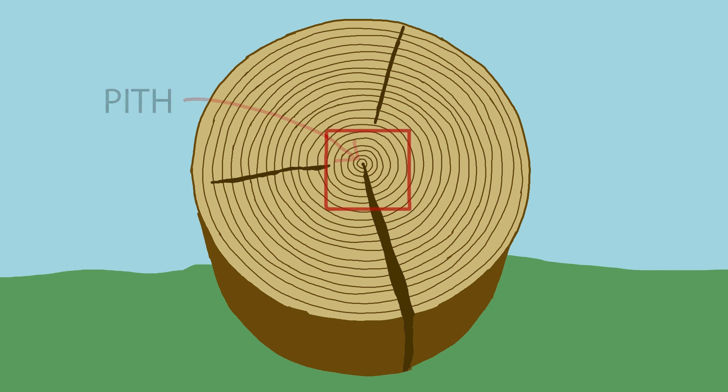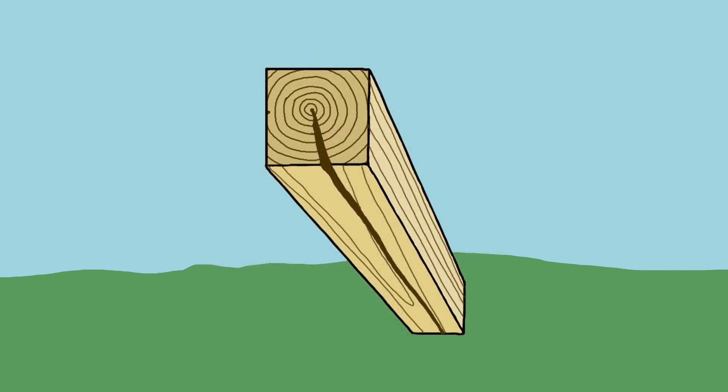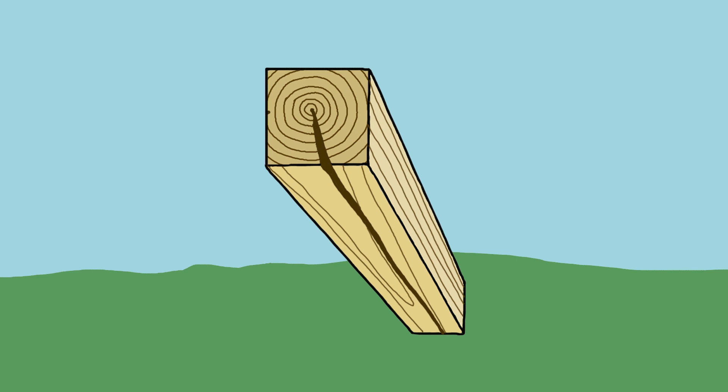If a board includes the pith, it is already cracked, or it will be before long. Boards that include the pith, or wood near the pith, are not stable and should be avoided when at all possible.